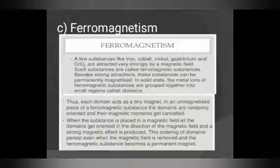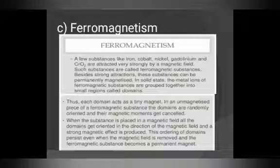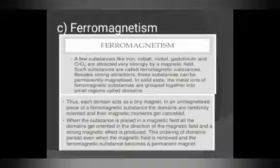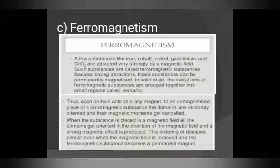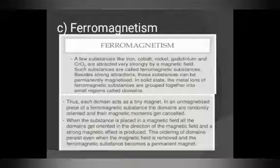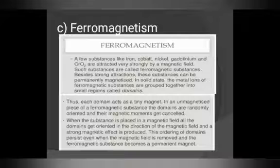Third is ferromagnetism. A few substances like iron, cobalt, nickel, and chromium oxide are attracted very strongly by a magnetic field — such substances are called ferromagnetic. Unlike paramagnetism which is weakly attracted, ferromagnetism is strongly attracted. Besides strong attraction, these substances can be permanently magnetized in solid state due to domains — small regions that each act as a tiny magnet. When placed in a magnetic field, all domains get oriented in the same direction, producing a strong magnetic effect.